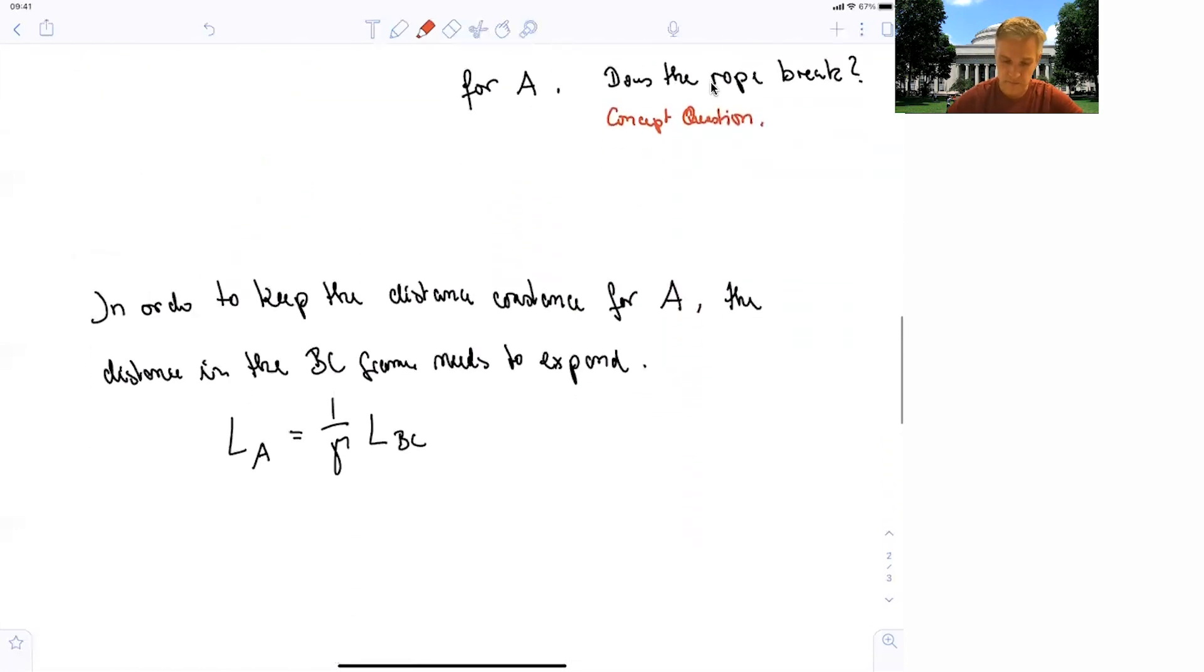In the meantime, this is not such a hard problem, actually. In order to keep the distance constant for A, the distance in the BC reference frame, in the reference frame of the two spacecraft, needs to expand.